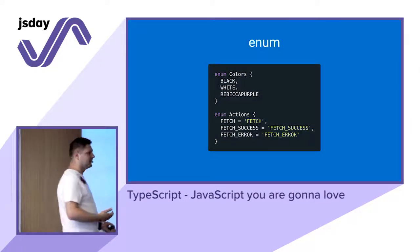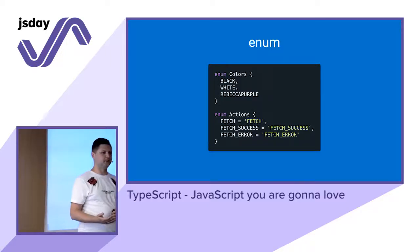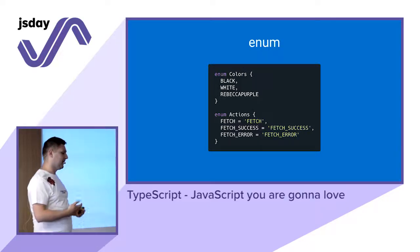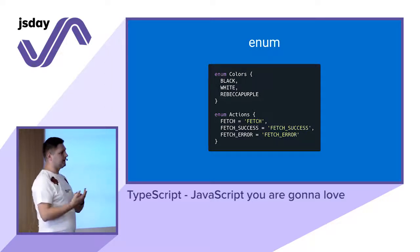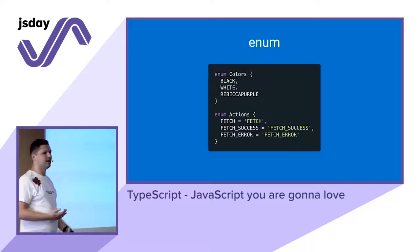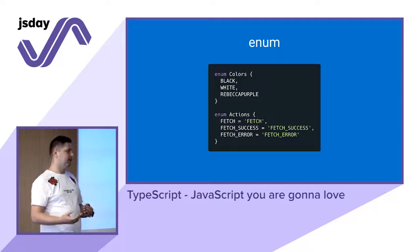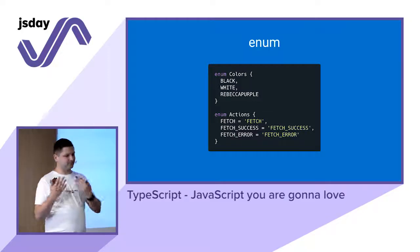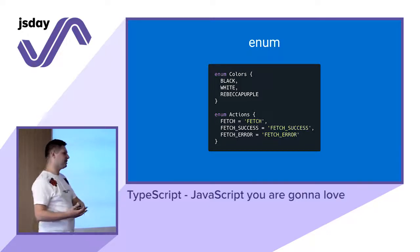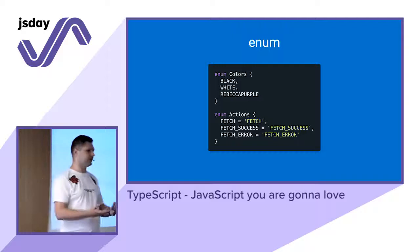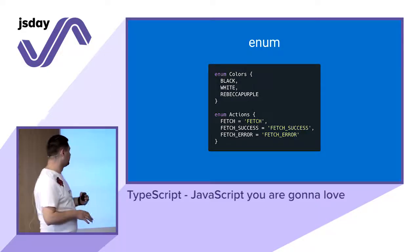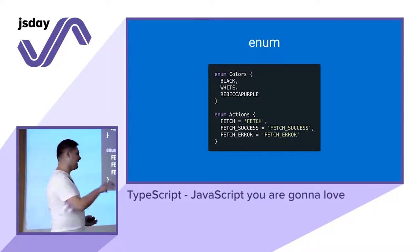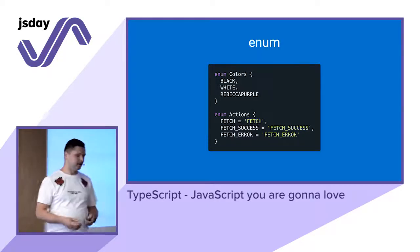Enums are not available in the ECMAScript standard, but developers with a Java or C# background are familiar with them. They are an enumeration of keys with values — by default, numeric starting from zero, but you can use strings as values. After transpilation, enums become simple objects with both keys and values swapped inside. In our team, we usually define Redux action types as enums.